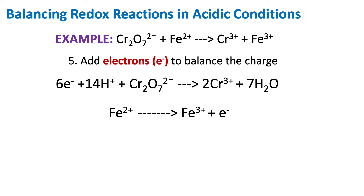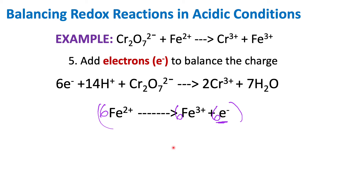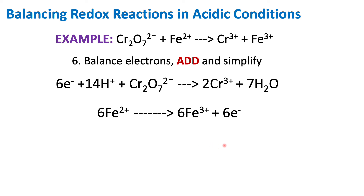Now we have to make sure that both of the half reactions have the same number of electrons. In the chromium half reaction we have 6 electrons, but in the iron half reaction we only have 1 electron. We want the number of electrons to be the same in both half reactions so we can cancel them out. We can multiply the iron half reaction by 6 to get 6 Fe2+, 6 Fe3+, and 6 electrons. Now we have 6 electrons in both half reactions.